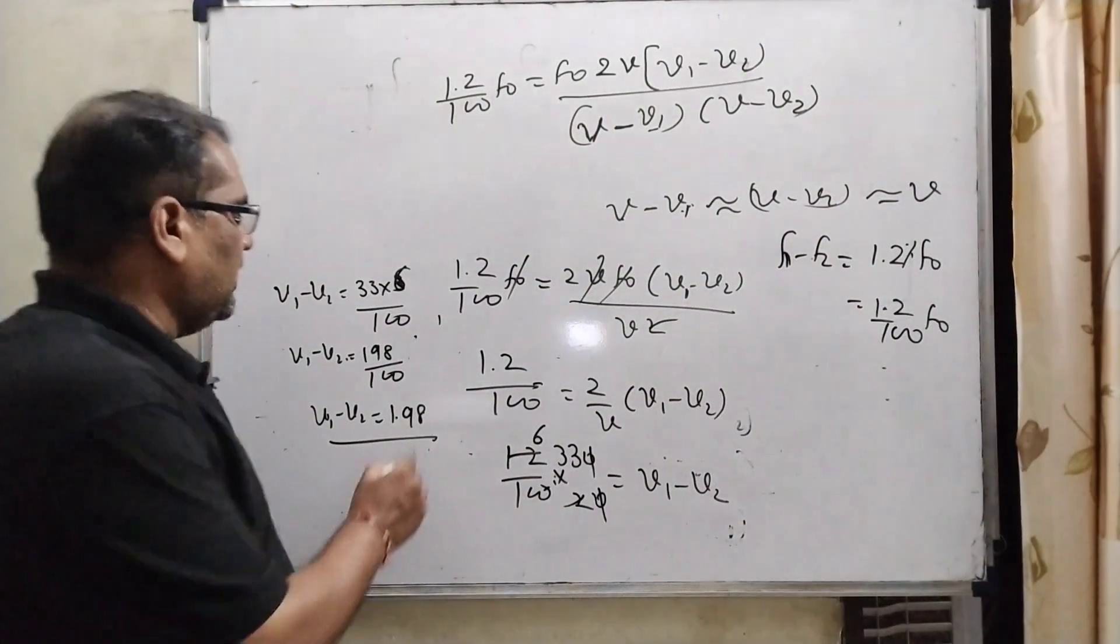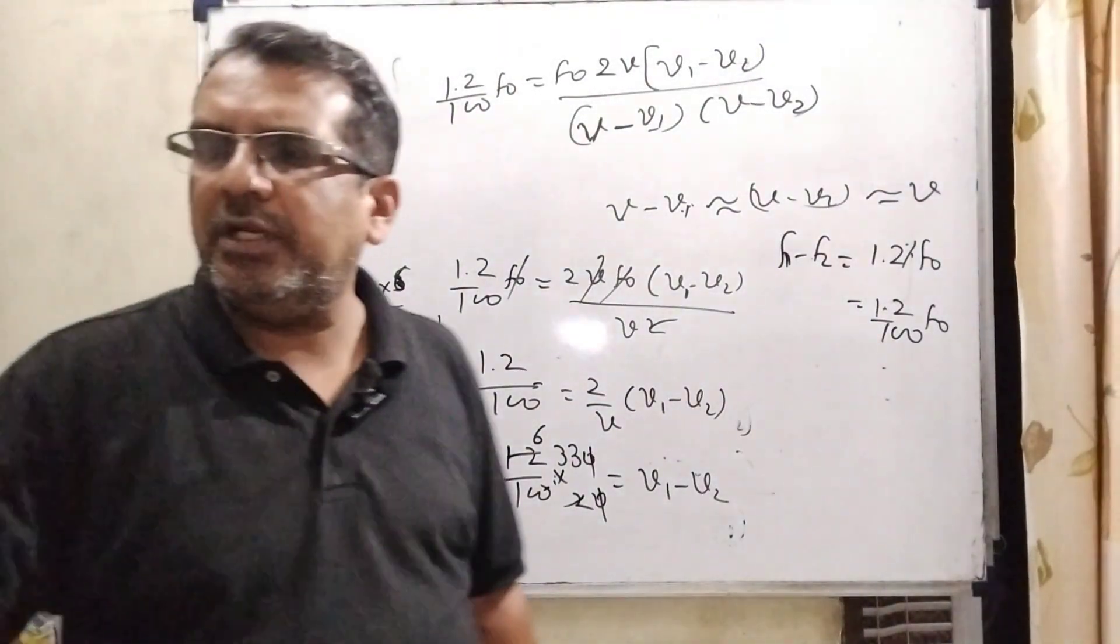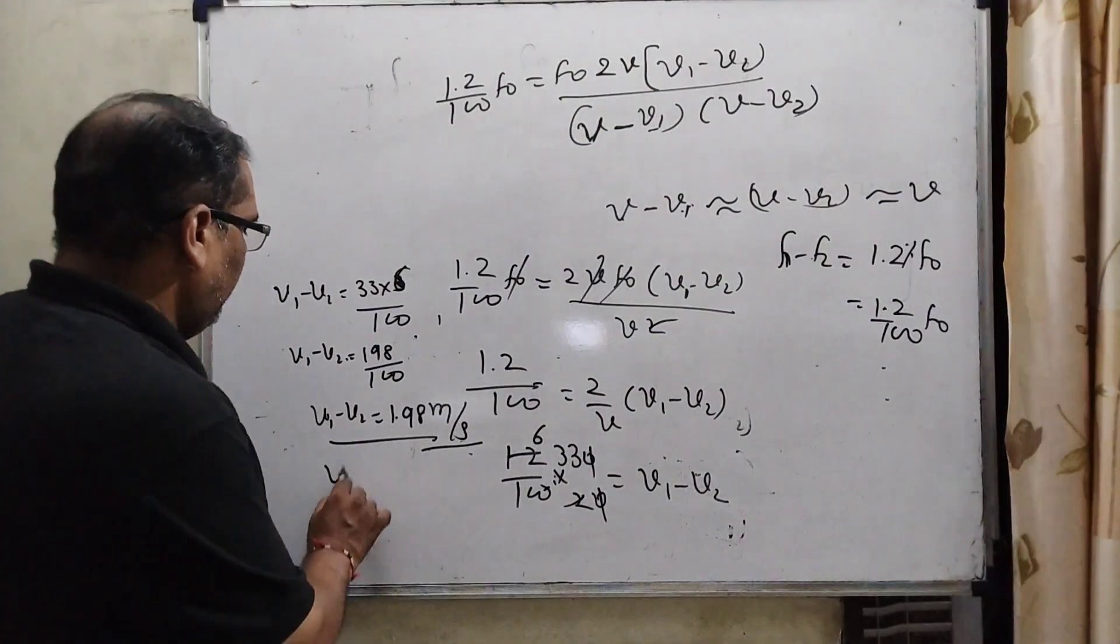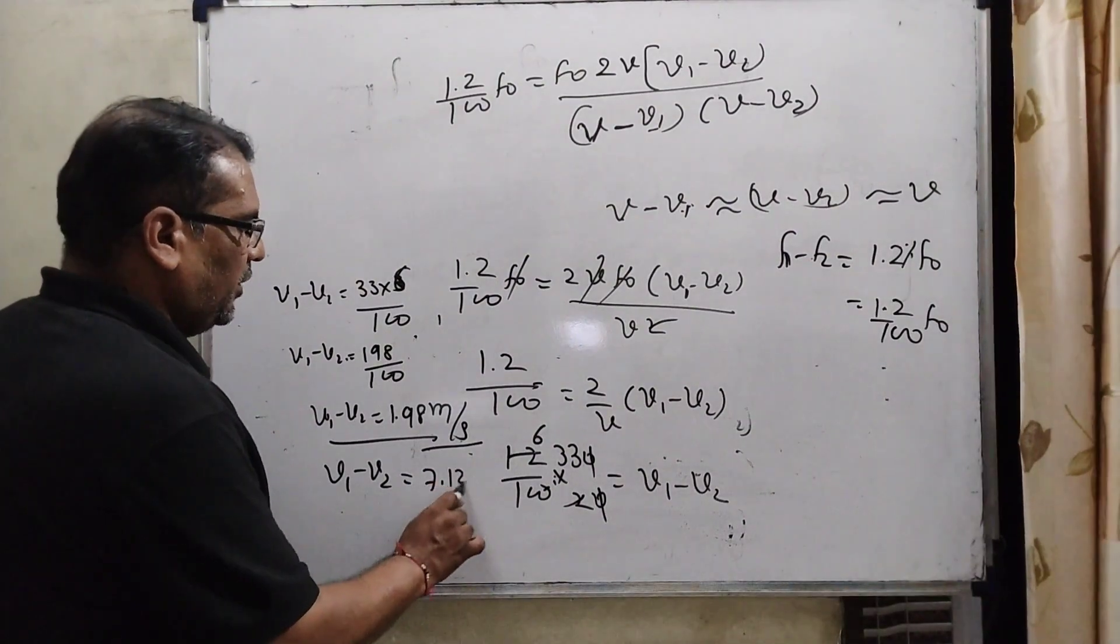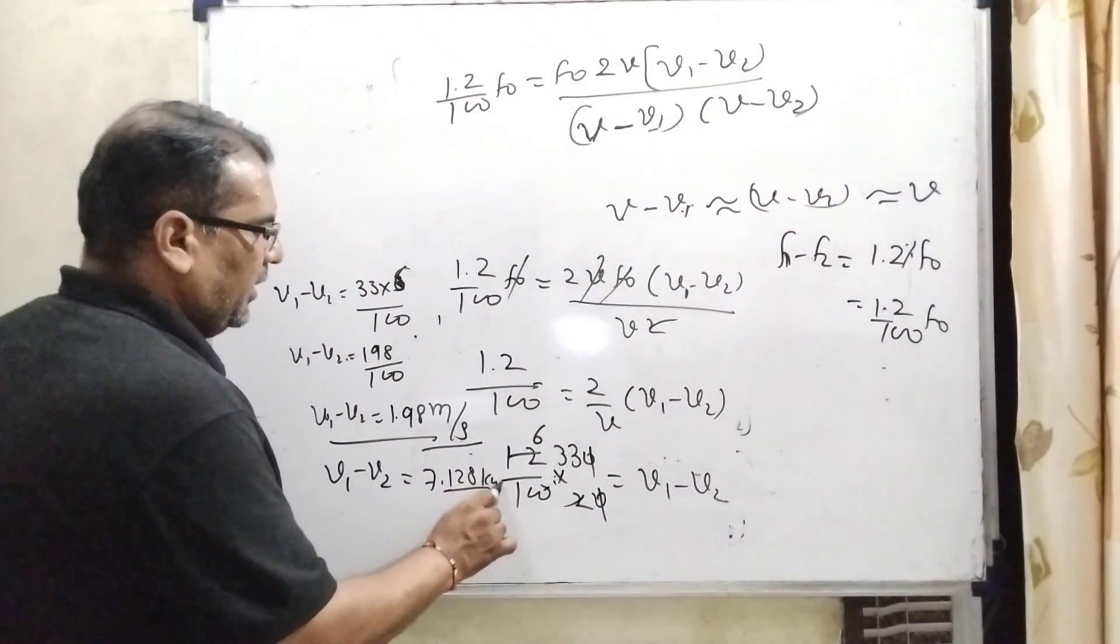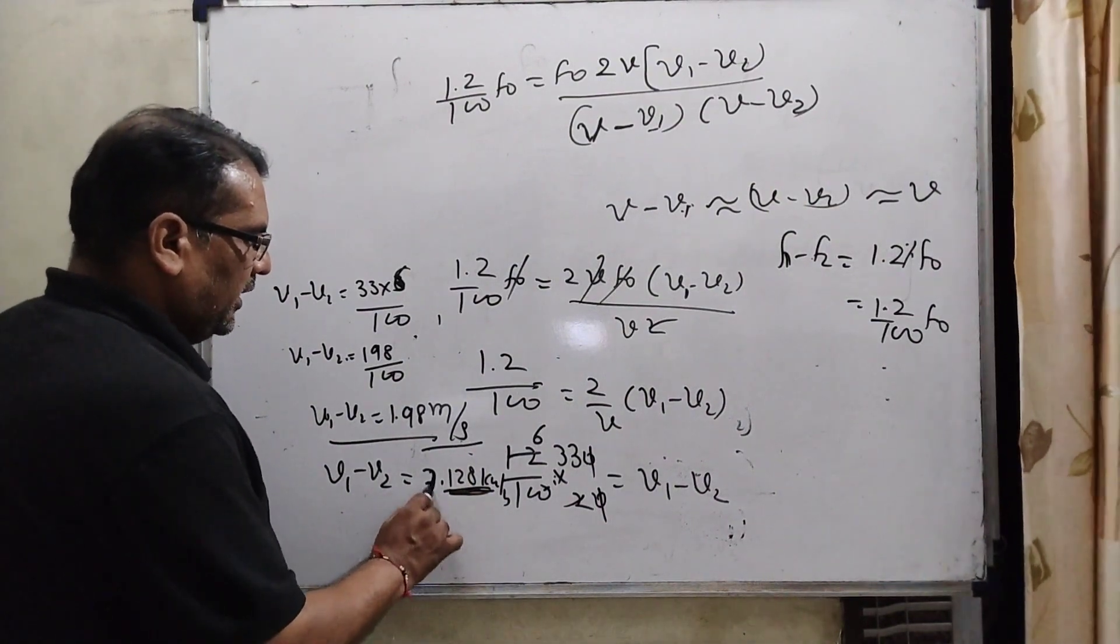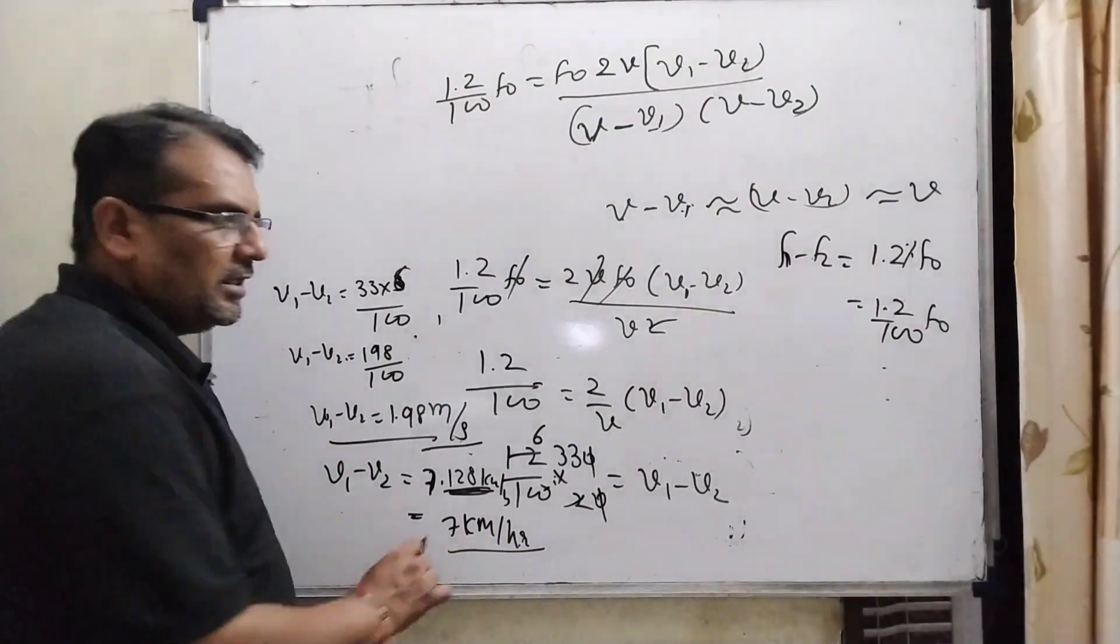Now, this answer is in meter per second and we have to convert into kilometer per hour, then multiply by 18 by 5. Then we will get V1 minus V2 is 7.128 kilometer per hour. Now, we have to find out the closest value is 7 kilometer per hour. That is the correct answer.